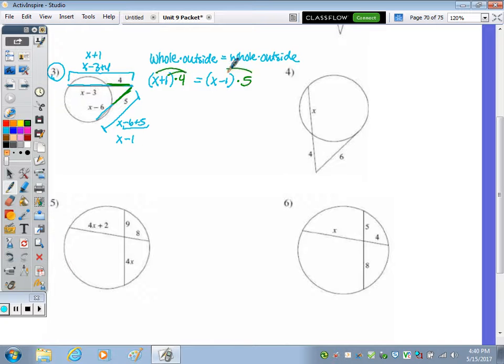Distributing, we've got 4x plus 4 equals 5x minus 5. Solving for x, you would add the 5 over to get 9, subtract 4x from 5x to get x. And the directions just say to solve for x, so we're done. So that's the theorem for segment relationships and for two secants.